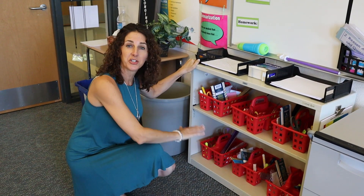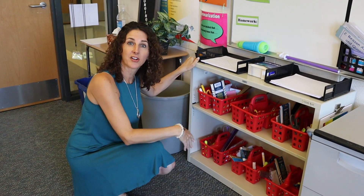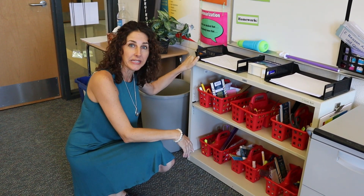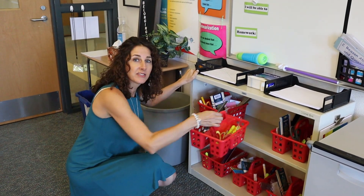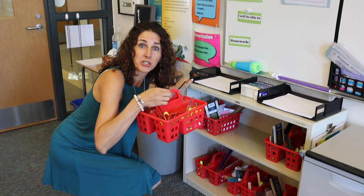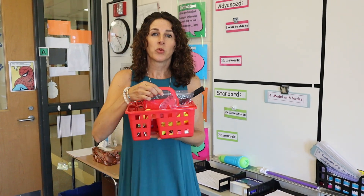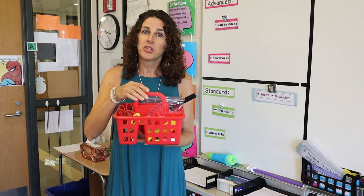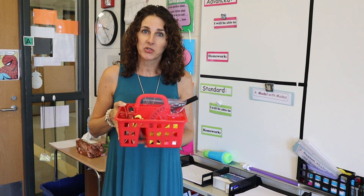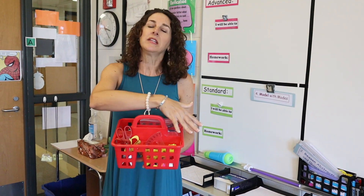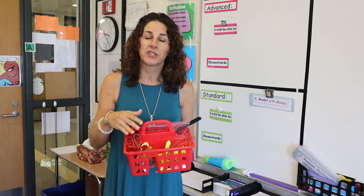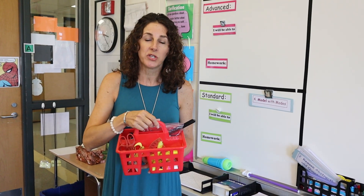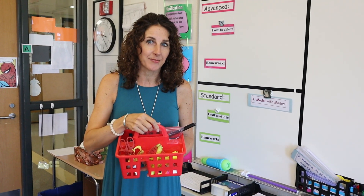Look at this area right here. You'll notice that there are six red bins — that's because we have six table groups. These are our geometry toolkits, and we're going to be starting with unit one for math, which is about geometry. In here will be some of the manipulatives and tools that you'll use when you're thinking about mathematics.